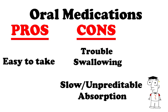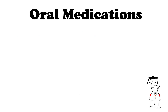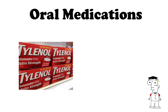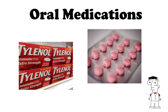Oral meds are also slower to absorb because they have to go through the entire digestive system, and absorption can be somewhat unpredictable because of stomach acid and digestive enzymes. Sometimes physicians have to play around a little bit with dosings just to get it right. Examples include Tylenol, cholesterol medications, blood pressure medications, and pretty much every other med out there has an oral option.